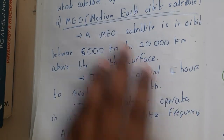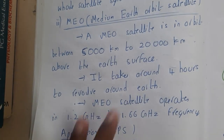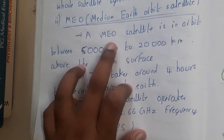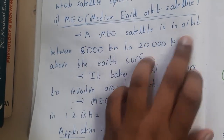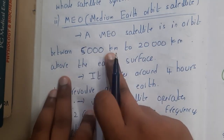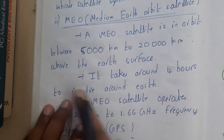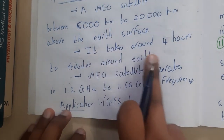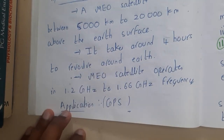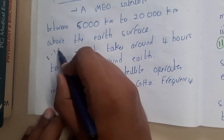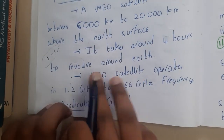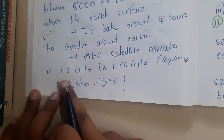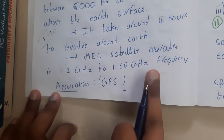Now let us move on to MEO — Medium Earth Orbit. A MEO satellite is in orbit between 5,000 kilometers to 20,000 kilometers above the earth surface. It takes around four hours to revolve around the earth, compared to one to 1.5 hours for LEO. MEO satellites operate at a frequency of 1.2 to 1.6 GHz.